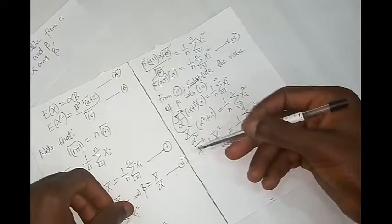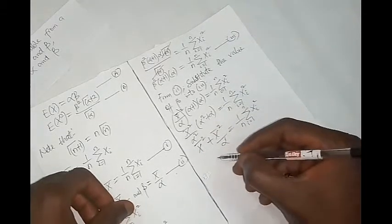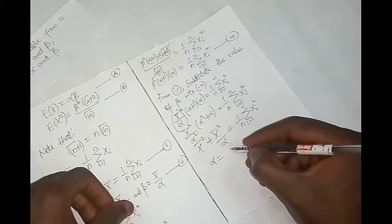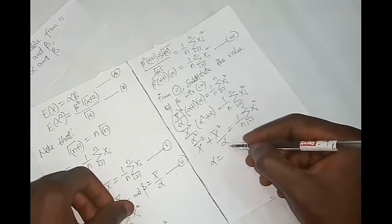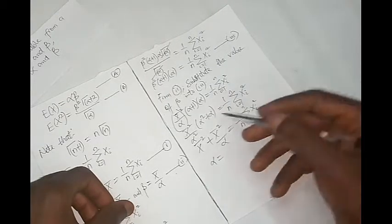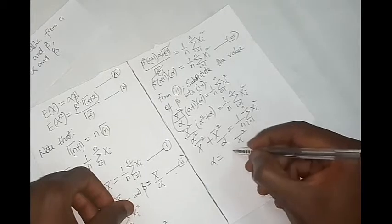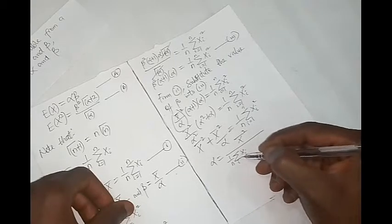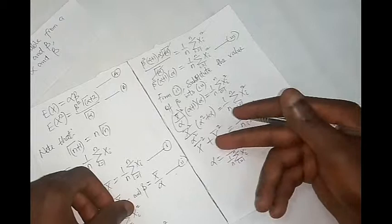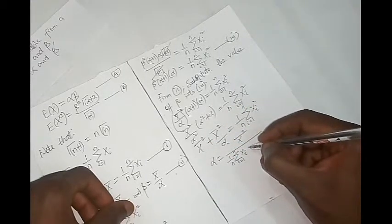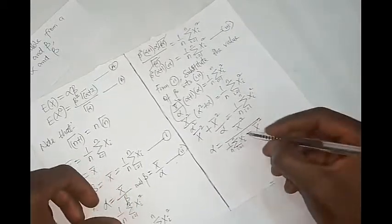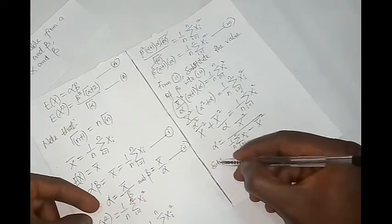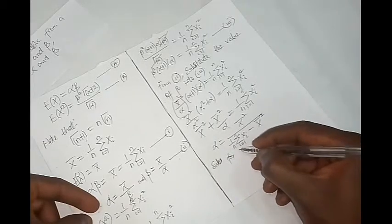Carrying mean squared to the other side, the value of alpha equals mean squared over 1 over n times the summation x_i squared from i equals 1 to n, minus mean squared. That is the final answer for alpha.